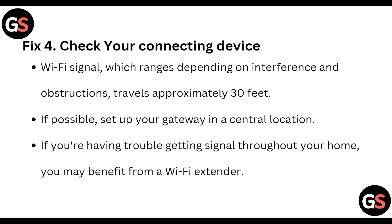Fix 4: Check your Connecting Device. Wi-Fi signal range depends on interference and obstruction, and can travel approximately 30 feet. If possible, set up your gateway in a central location. If you are having trouble getting signal through your home, you may benefit from a Wi-Fi extender.